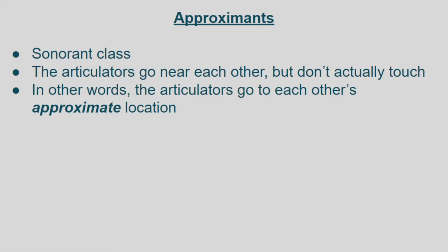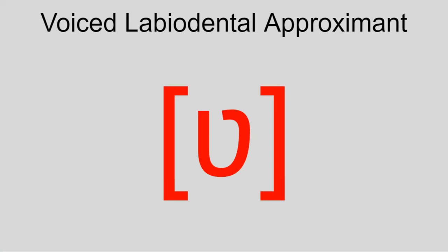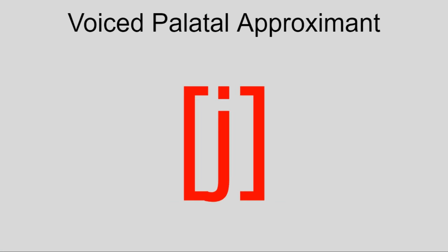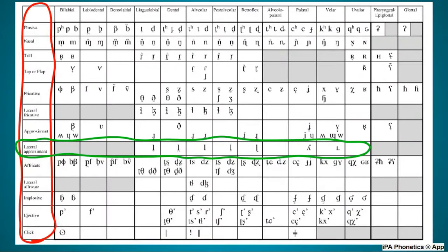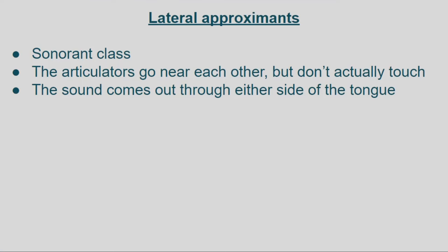After that we have approximants, a sonorant class where the active articulator goes near the passive articulator but doesn't touch. They're also sometimes called liquids or semi-vowels since they're pretty close to being vowels. Some of them are W, labiodental approximant, R, and Y. And there are also lateral approximants where the air comes out beside the tongue — the main one is L, but there's also ɭ and ʎ.